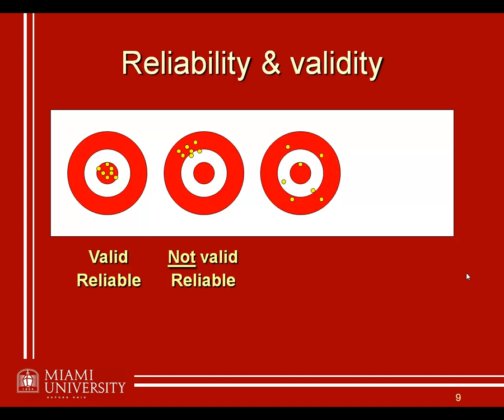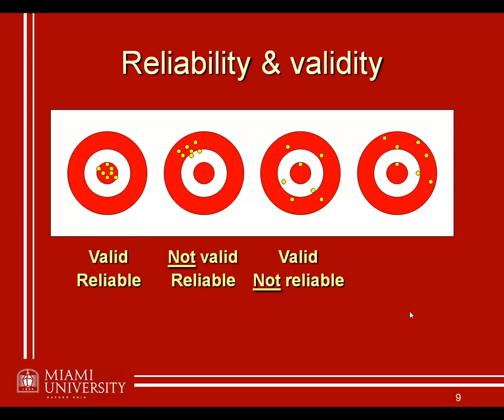Now contrast that with another situation where our darts are all over the place. On average, maybe it looks like they're kind of grouped near the center, but it's kind of hard to tell. In this situation, we might have validity — it seems that on average we're accurate, we're kind of averaging these darts onto the center of the dartboard — but with such low reliability, because they're scattered all over the place, it's hard to tell. And finally, you can think about a situation where not only are our measurements all over the place, but even on average they're not really even in the neighborhood of where we want them to be — a situation where we lack both reliability and validity.